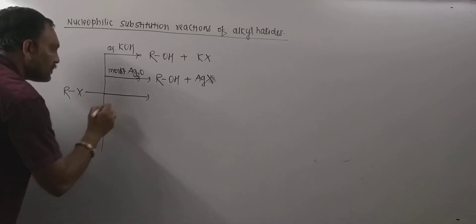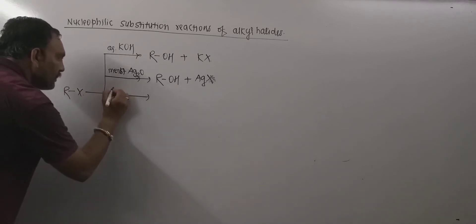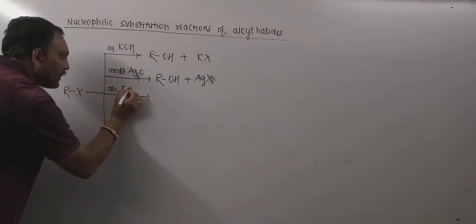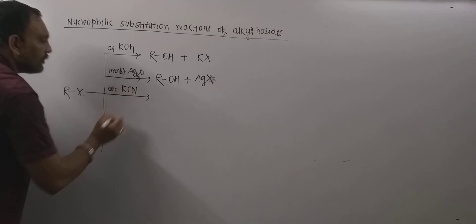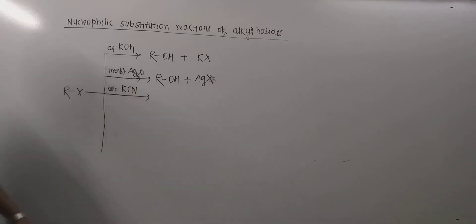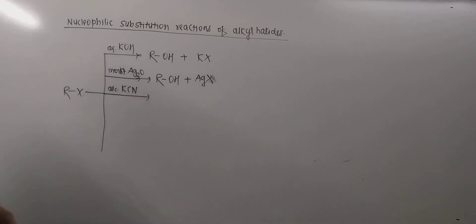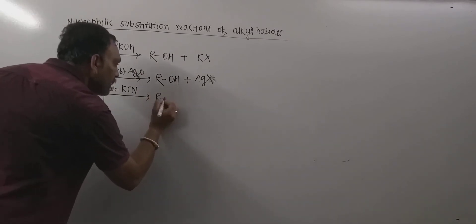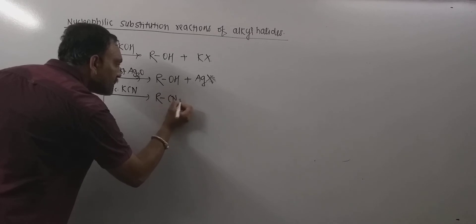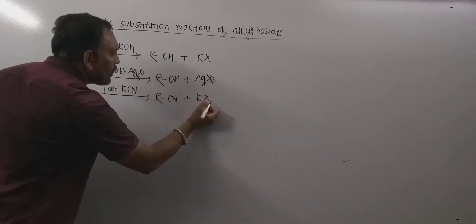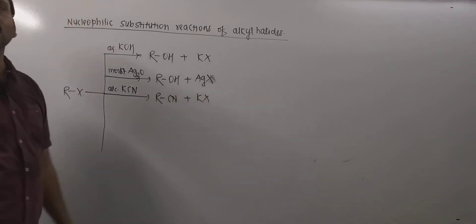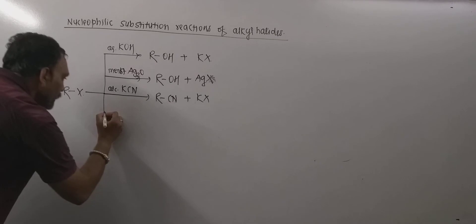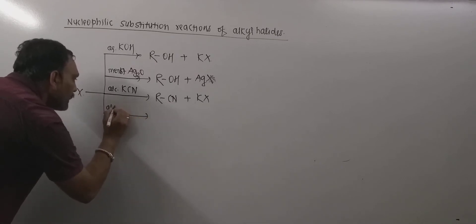Next, a very important nucleophilic substitution is the reaction with alcoholic KCN, that is potassium cyanide. Here CN⁻ is the nucleophile. When alkyl halides are treated with alcoholic potassium cyanide, alkyl cyanides (nitriles) are obtained along with potassium halide.